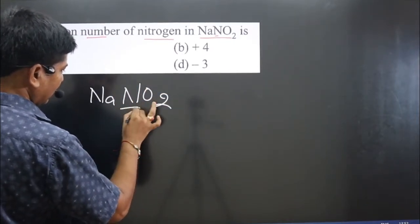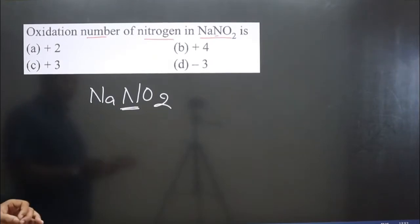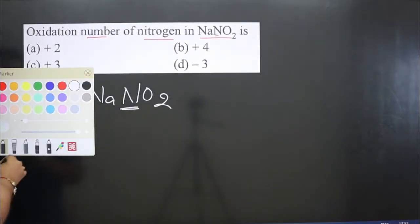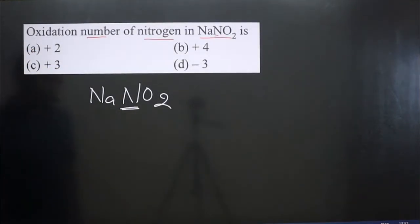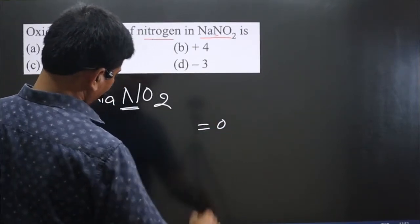We have to calculate the oxidation number of nitrogen. In a neutral compound, total oxidation number of all the elements is always equal to 0.